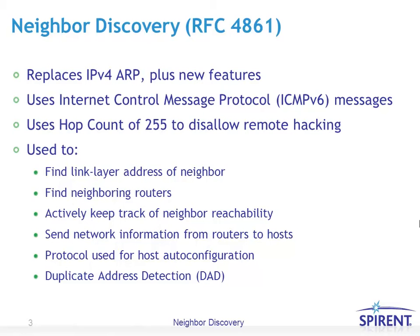Neighbor Discovery messages set the hop count to 255, which is the maximum allowable value for that field — in other words, all 8 bits set to 1. This disallows remote hacking because if any packet came from a subnet other than the one it's received on, it's not considered a valid Neighbor Discovery packet. Neighbor Discovery should only be performed between two nodes on the same subnet.